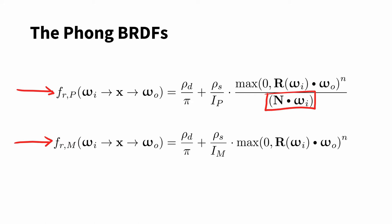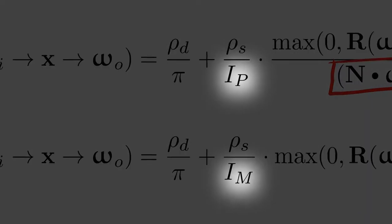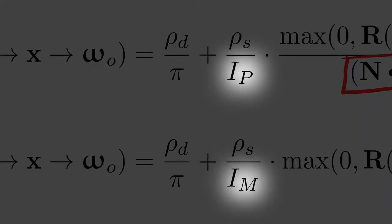So what's the problem? The problem is, about those normalization terms, they ensure that energy is neither created nor destroyed, and no one knows what they should be.